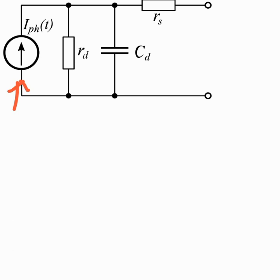So it's not a constant current source, we can model it with a time-varying current source. Then R_d represents the reverse bias resistance of a diode.